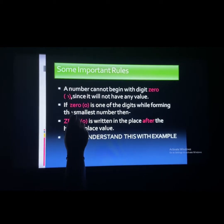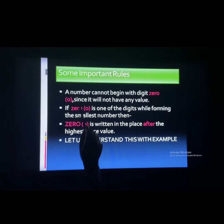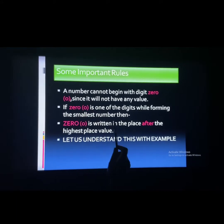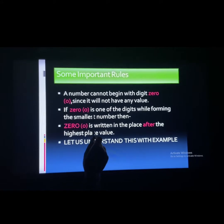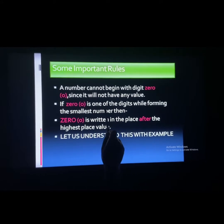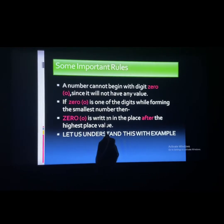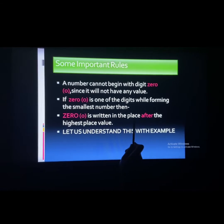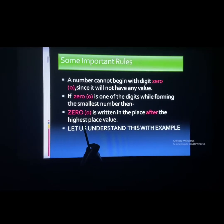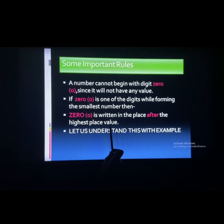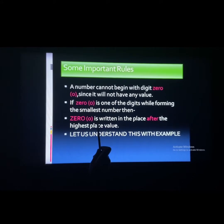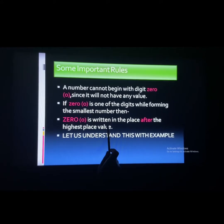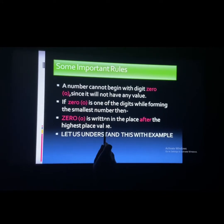A number cannot begin with digit 0 since it will not have any value. If you place 0 at the start, 0 will not have any value. If 0 is one of the digits while forming the smallest number, then 0 is written after the highest place value. Suppose we have 4 digits — it will be placed after the 1000's place, meaning it will be placed at the 100's place. Let us make these points more clear using one example.